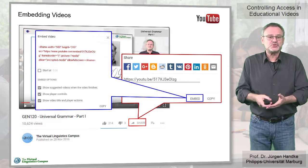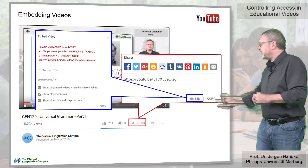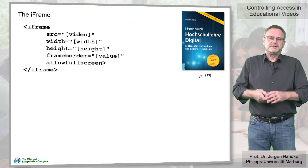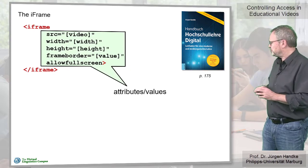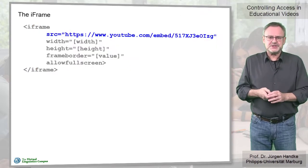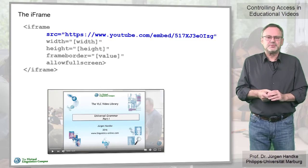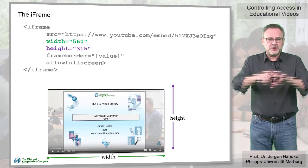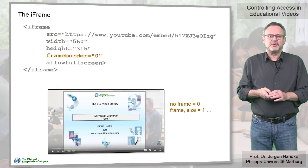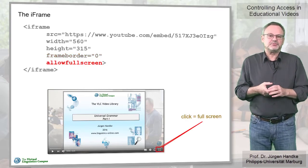An inline frame is a frame that hosts or embeds the video on a website. Let us look at the basic components of the iframe in more detail. The iframe code is contained within the iframe tags, which in turn host several attribute-value pairs. The attribute SRC, which stands for source, defines the embedded video. The two attributes width and height define the size of the video in pixels, and if we want a frame around the video we can use the attribute frameborder and define its size in pixels.